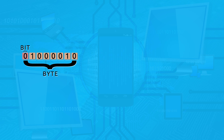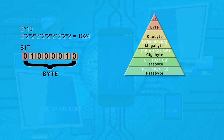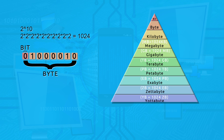The basic measurement of electronic information is a bit, which is either a one or a zero — the basis of binary code that makes computers work. It takes eight bits to make up one byte or one character. That is also why one kilobyte of data is 1,024 bytes, or 2 to the power of 10. From a kilobyte we move up to the megabyte, which is 1,024 kilobytes. Then a gigabyte, terabyte, petabyte, exabyte, zettabyte, yottabyte, and the new brontobyte.